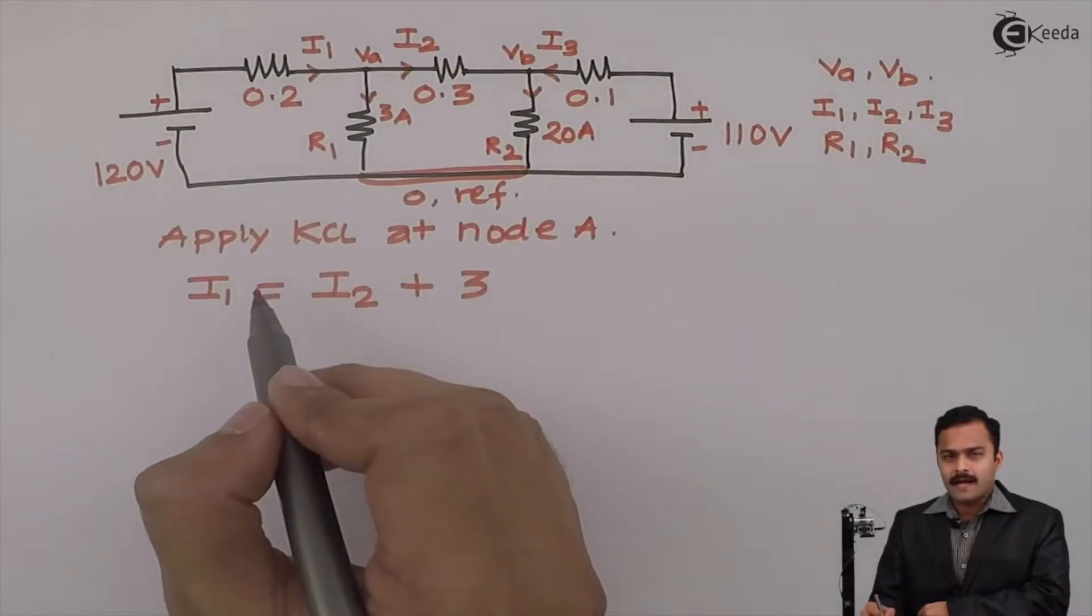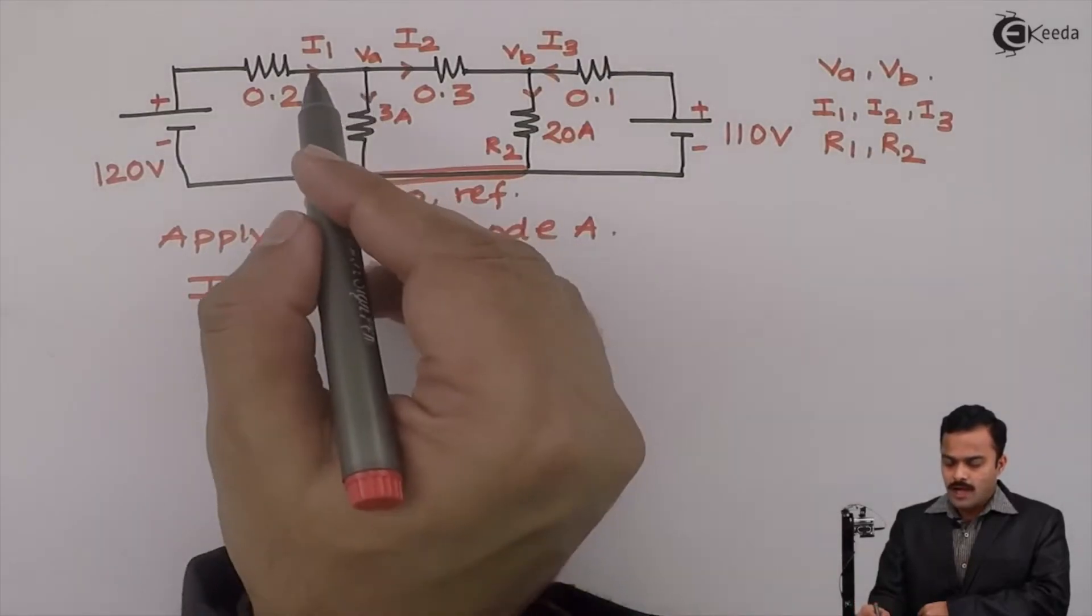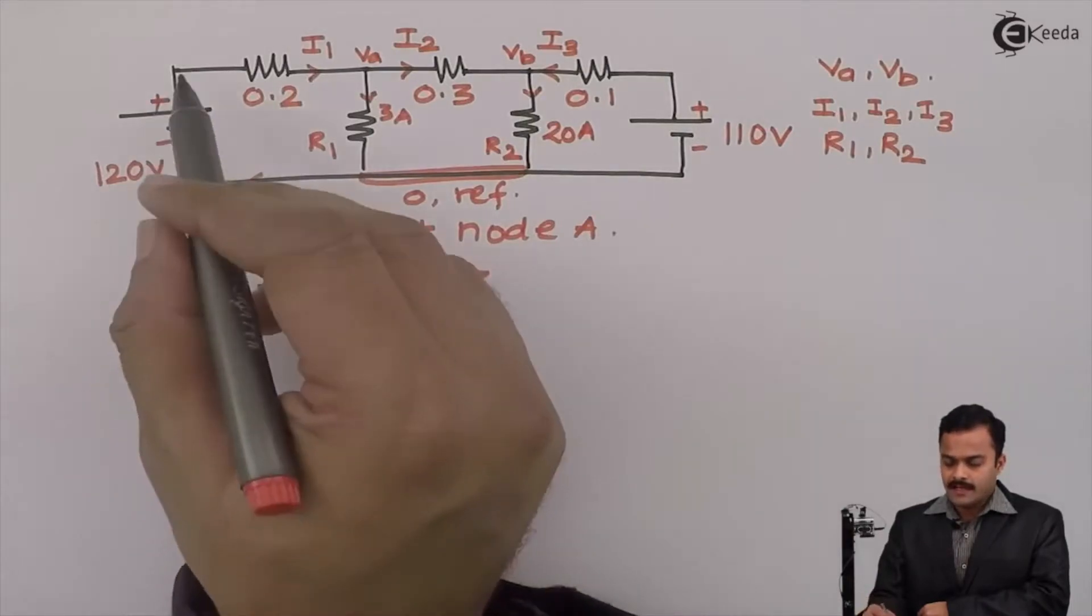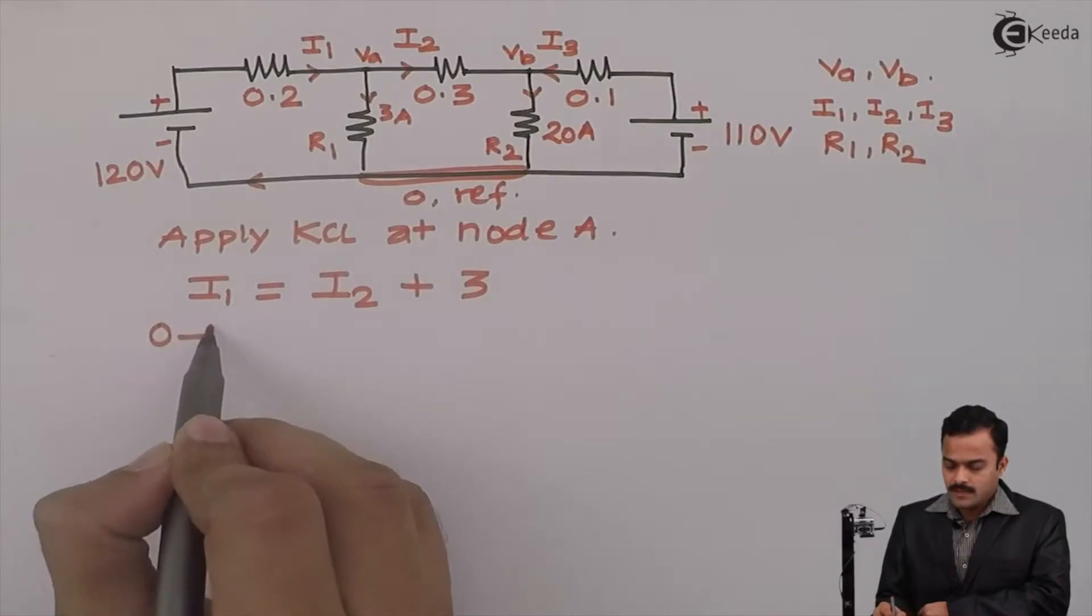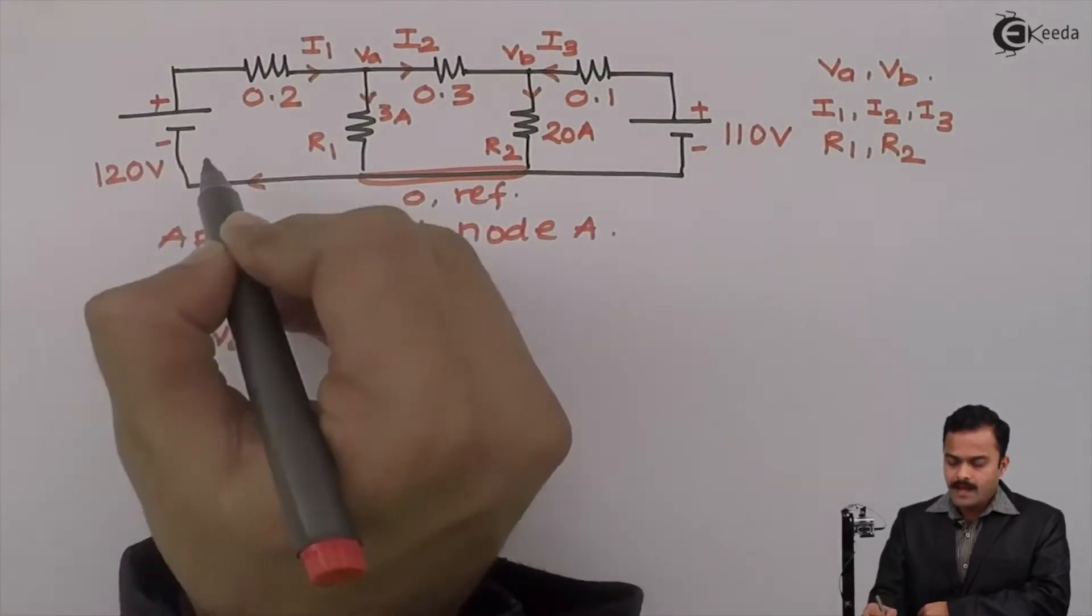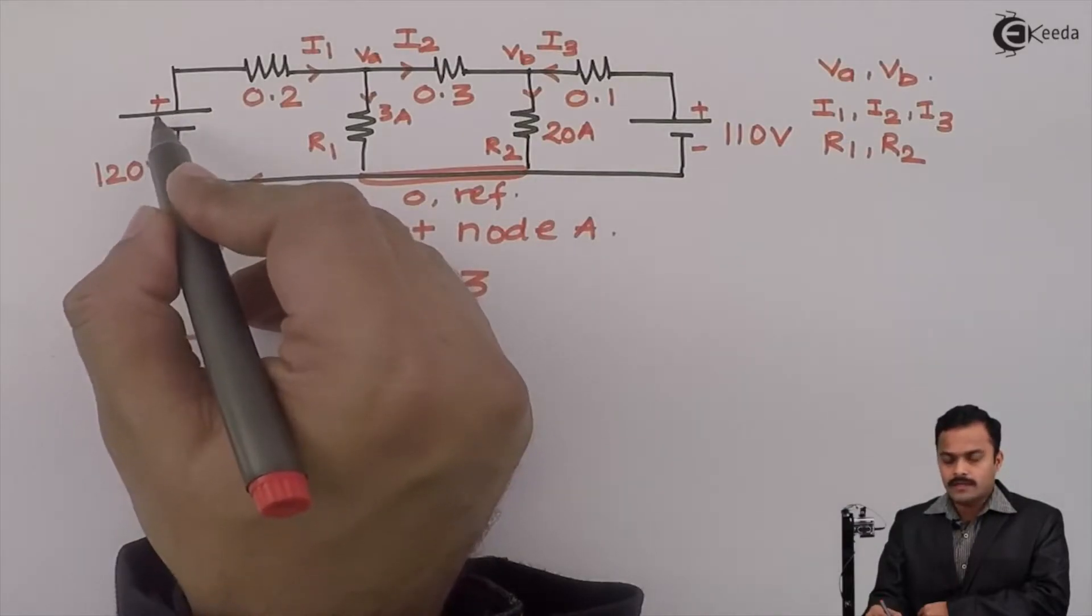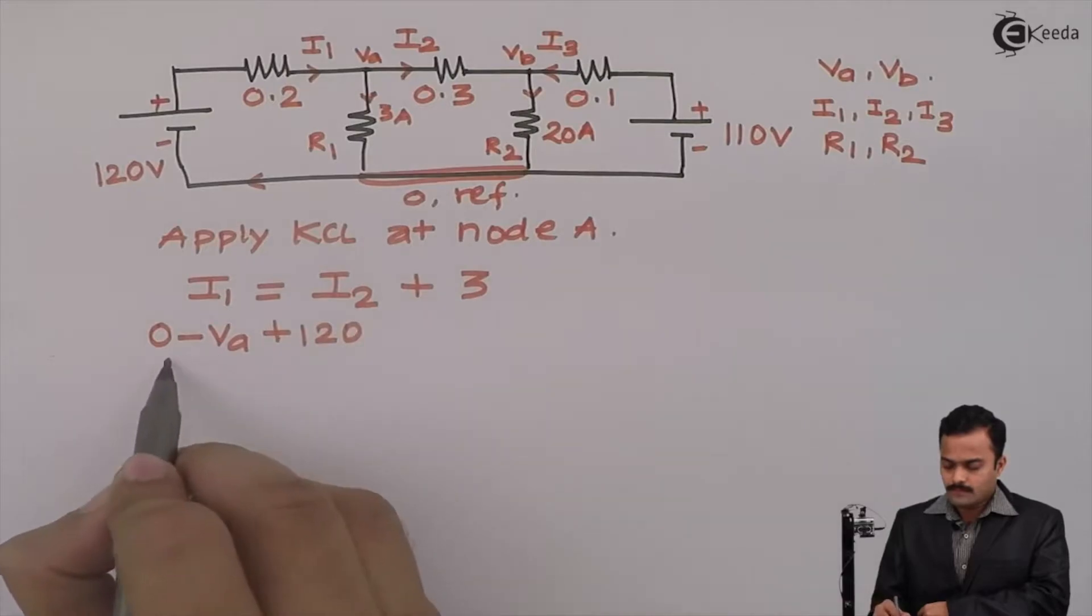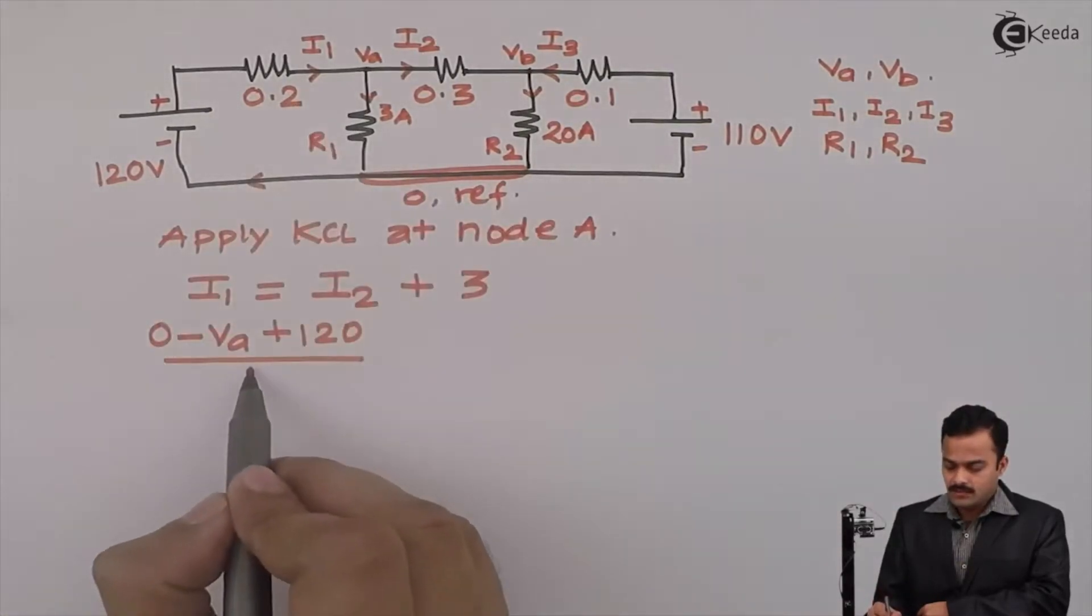Now, let's write I1, I2 in terms of Va, Vb. I1 is a current which has started from reference and ending on A node. Starting from reference ending on A and in the direction I am having a voltage rise 120V. So, plus 120 divided by resistance of this branch 0.2.